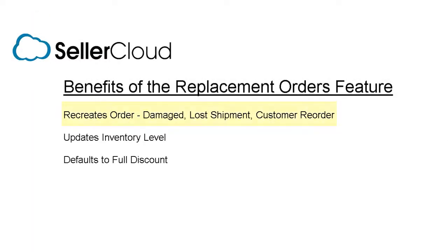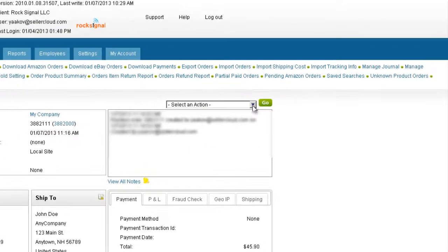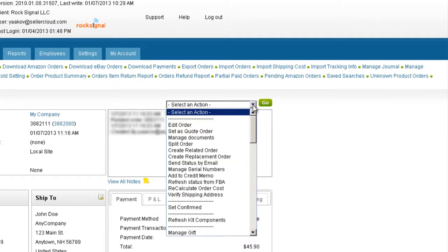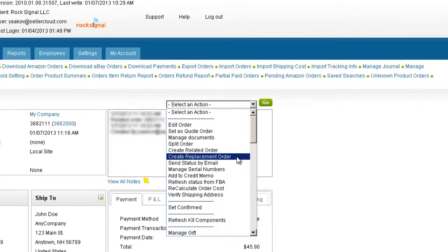A replacement order recreates a previous order. This is useful when replacing a damaged or lost shipment, or if the customer wants to reorder the same item. Open the order in question and select Create Replacement Order from the Action menu.